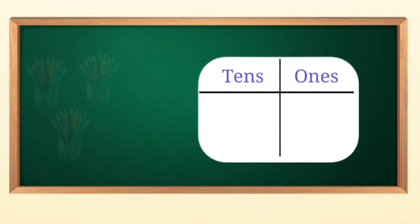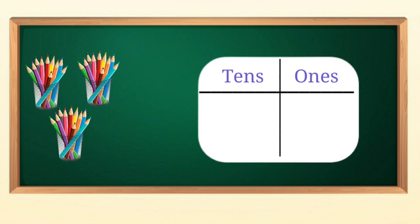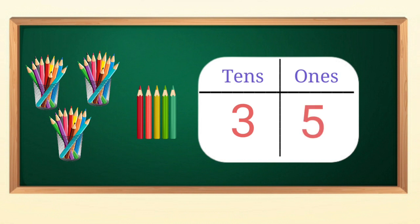Next, we have three tens color pencils in glasses and five pencils outside the glass. It means three tens and five ones, thirty-five.